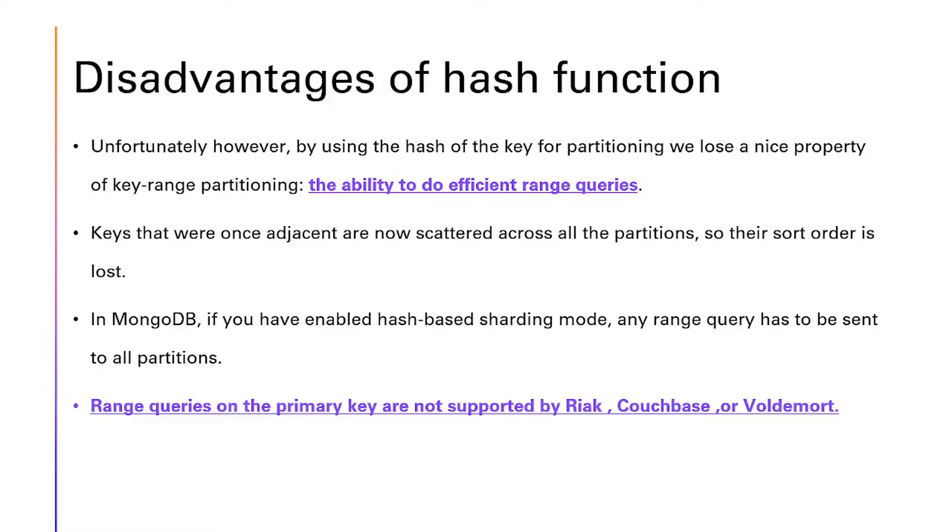Disadvantages of hash function. Unfortunately, by using the hash of the key for partitioning, we lose a nice property of key range partitioning: the ability to do efficient range queries. Keys that were once adjacent are now scattered across all partitions so that their sort order is lost.